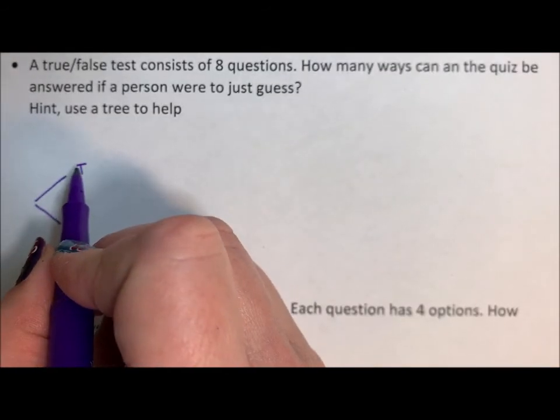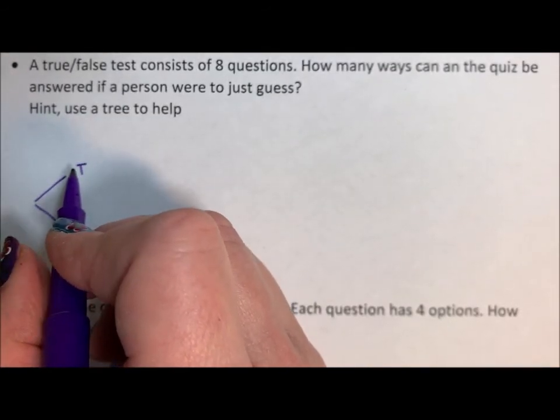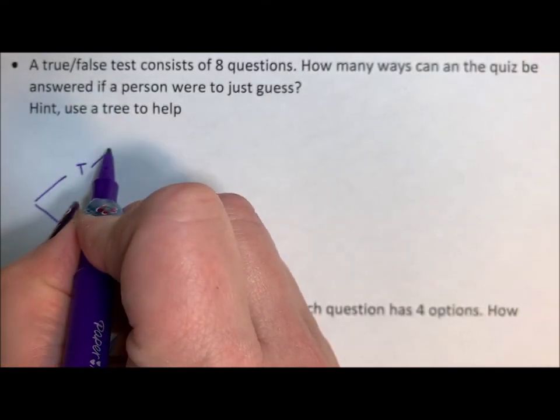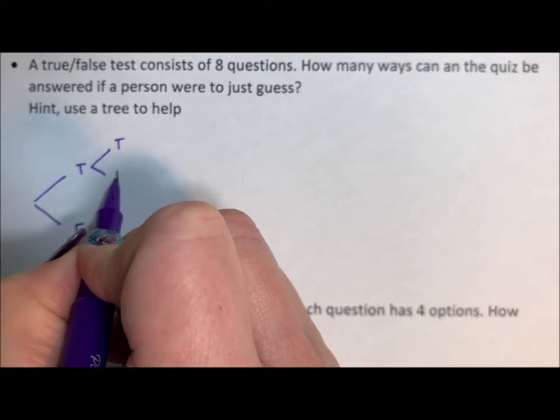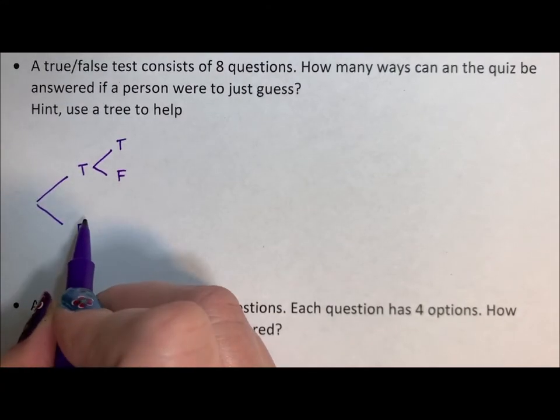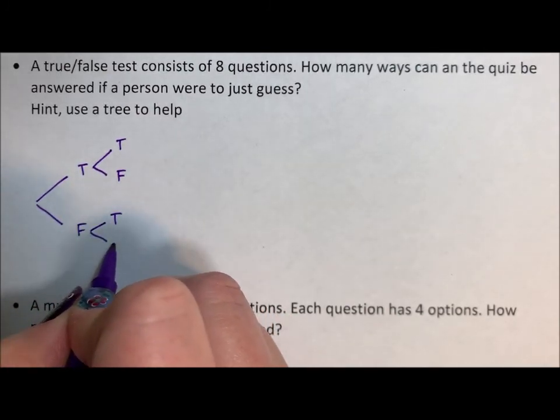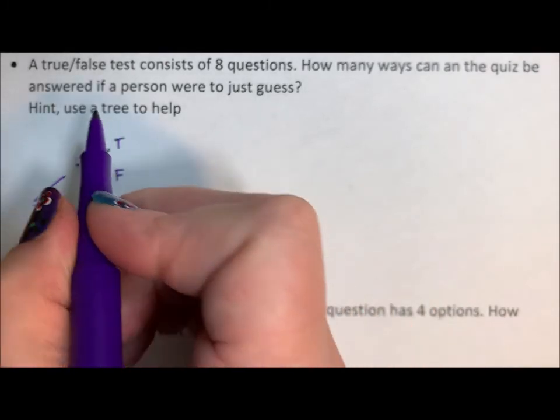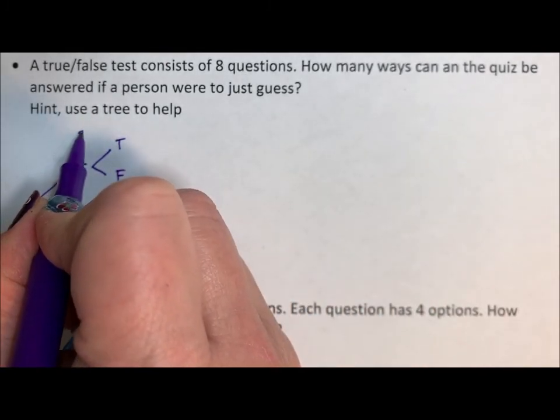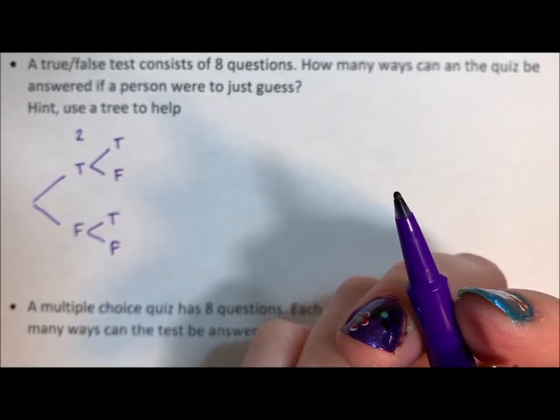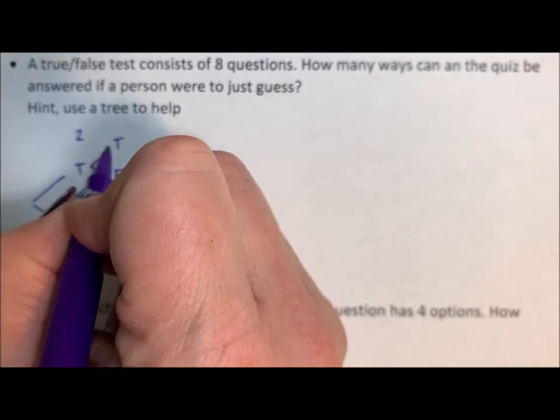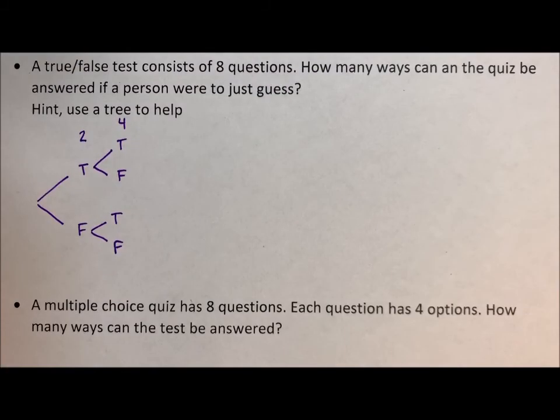Well, if you answered true on the quiz for the first question, for the second question you are either going to answer true or false. If you answered false for your first question, you're either going to answer true or false, which means at our first step, we either had one of two ways we could have answered it. By the second question, there was four ways, four outcomes: true true, true false, false true, false false.